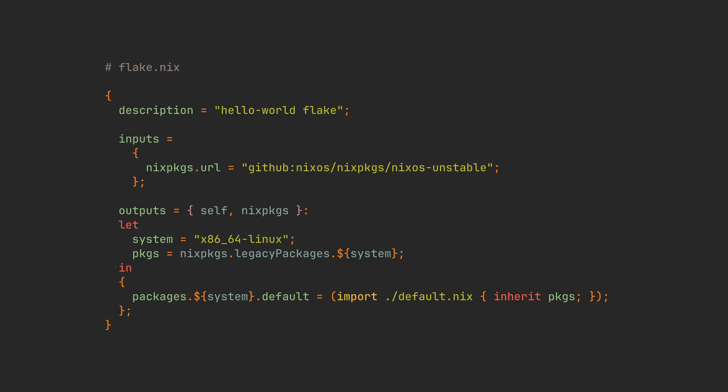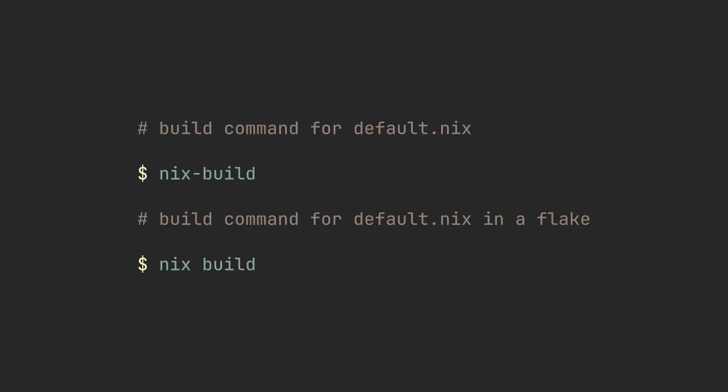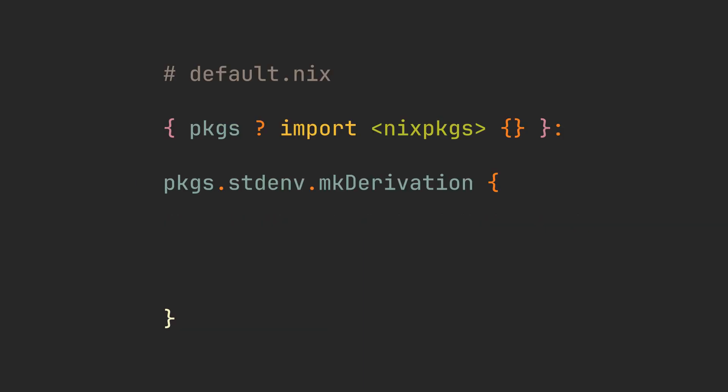You could also skip the default.nix file altogether and define the function directly in the flake. This flake package can now be built with a nix build command without a dash. Our makeDerivation function takes a set with some required keys, such as the name of our package, which is hello-world in our case, and src, which is the source for the package — we'll just put .src here because we want to use the entire src directory.